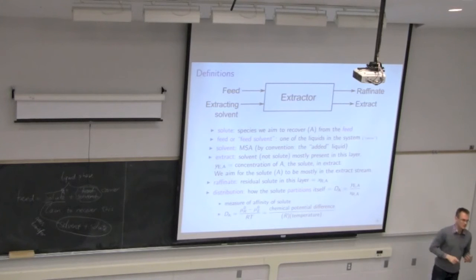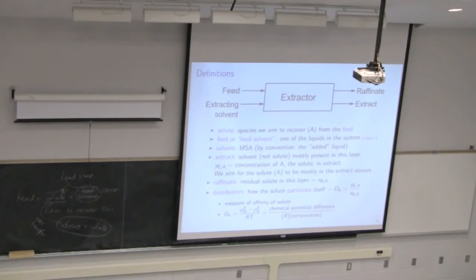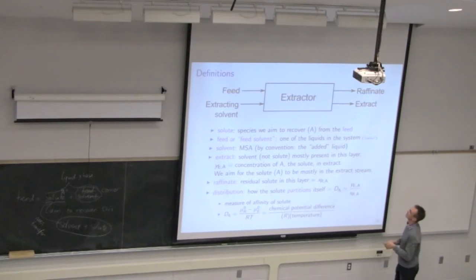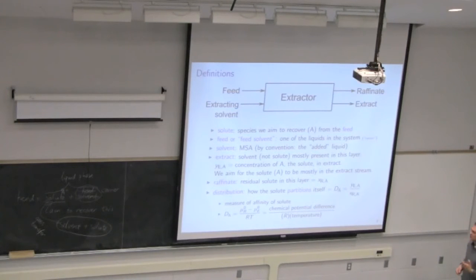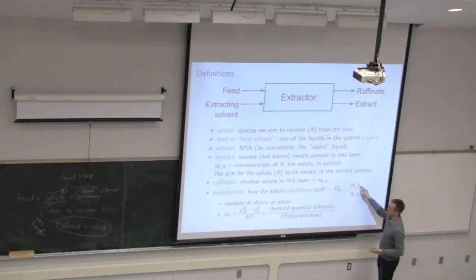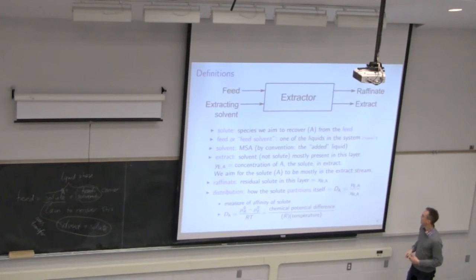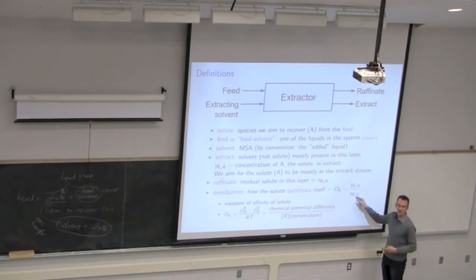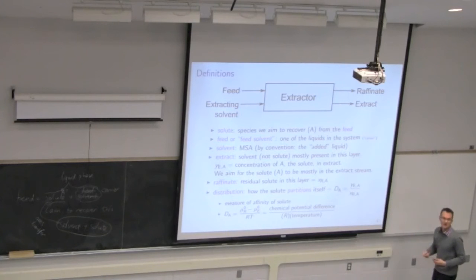What does it mean for D to equal zero? That means terrible or no separation — you picked a solvent that has no use; it hasn't picked up any solute. What you'd like is D to be as high as possible. You pick an extracting solvent so that the solute loads up into that solvent as much as possible, leaving little or nothing in the raffinate — so the denominator is close to zero and D is maximized.